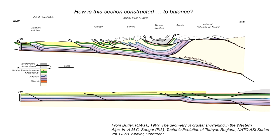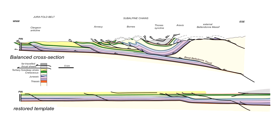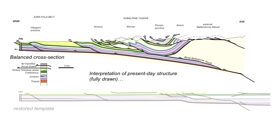The aim of this short presentation is to explore how this cross-section has been constructed as a balanced cross-section. The image has two key components: the balanced cross-section at the top and the restored template at the bottom. The balanced cross-section is an interpretation of the present-day structure, fully drawn in, showing how all these strata continue to depth beneath the landscape and how the geology joins up where it has been eroded.